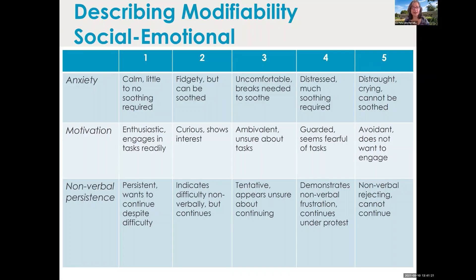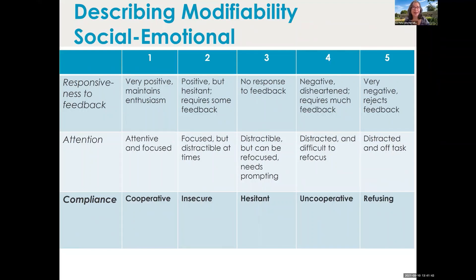We have scaled this out with descriptors for each level. For anxiety, a score of one means they didn't need any soothing — they're calm, they orient to the task well, they're enthusiastic and persistent. A score of five means they might be distraught, can't be soothed, don't want to engage, or reject the task. Other elements of the social-emotional aspect include responsiveness to feedback, attention, and compliance. Compliance is bolded because it's one of the areas most effective at differentiating typical development from DLD — whether they're cooperative or refuse to do the task.